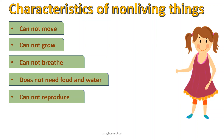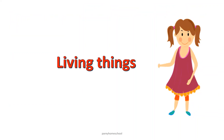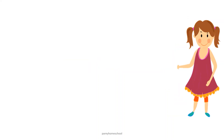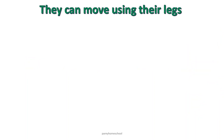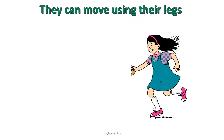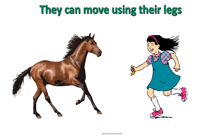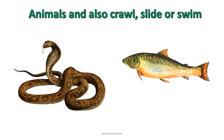Living things can move from one place to another. Human beings can move using their legs from one place to another. Animals also use their legs to move from one place to another. Animals without legs can crawl, slide, or swim using their body. They can move themselves — they do not need anyone's help to move. They are called living things.